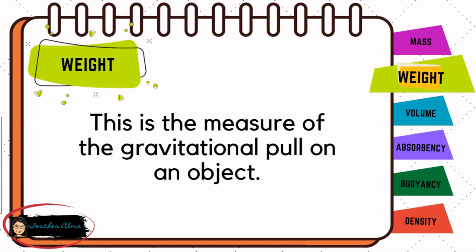If the mass is the measure of the amount of matter inside an object, weight is the measure of the gravitational pull on a certain object.